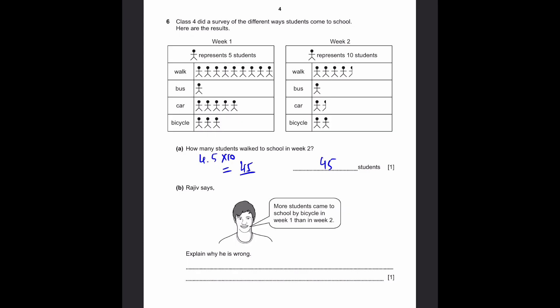B. Rajiv says, more students came to school by bicycle in week 1 than in week 2. Explain why he is wrong. Well, in week 1, one human picture represents 5 students. So there's 3 of these in bicycle, so this is 3 into 5, 15 students. And now for week 2, this represents 10 students. So 10 into 2 for bicycle, 20 students. So explain why he's wrong. It's because for week 1, number of students who came to school by bicycle were 15 students, which is less than 20 students for week 2. That's the answer.